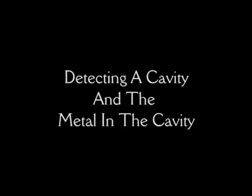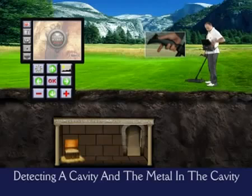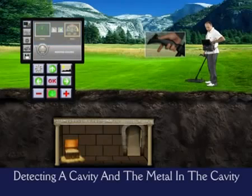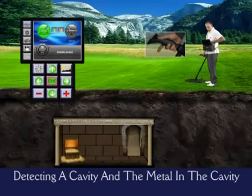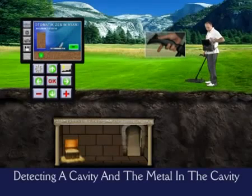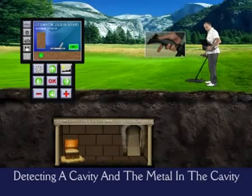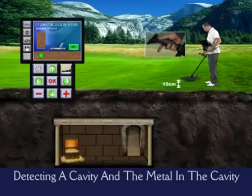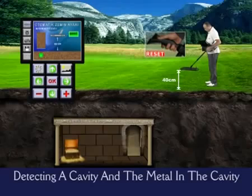Detecting a cavity and the metal in the cavity. The most important feature that separates Golden King from the other systems is its ability to detect cavities in the field as well as the metals.